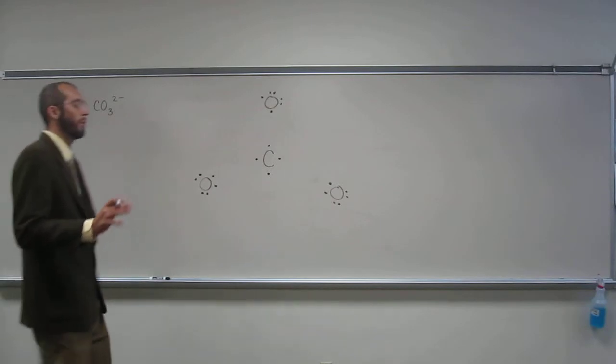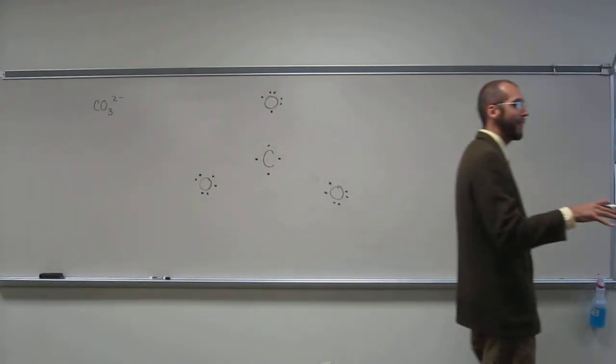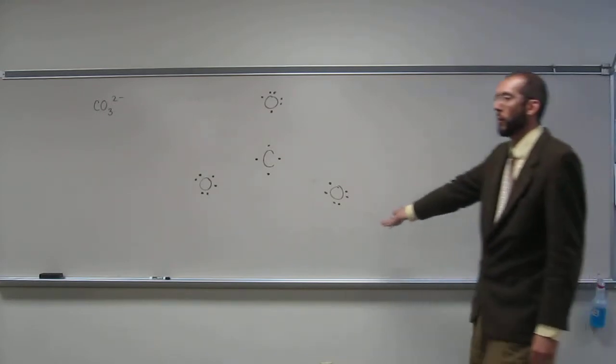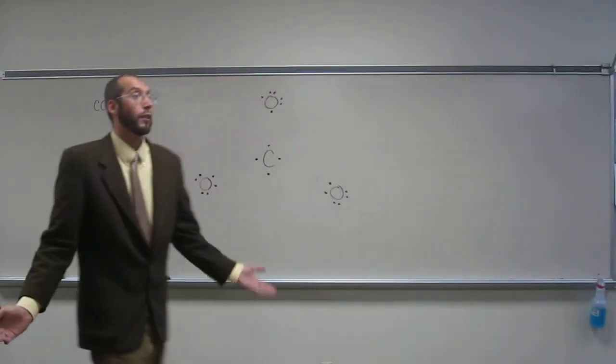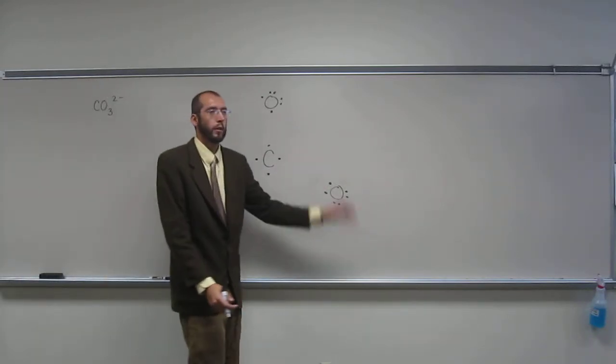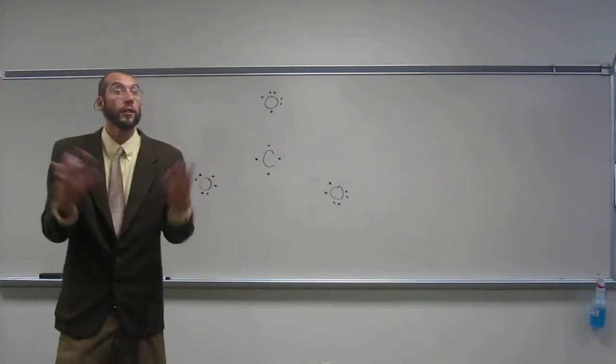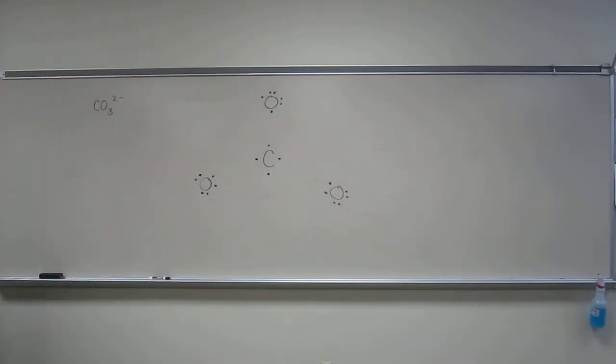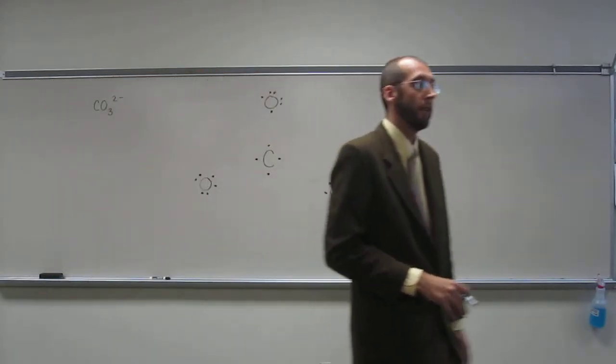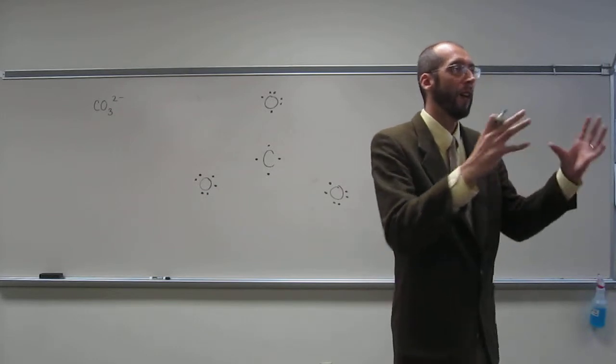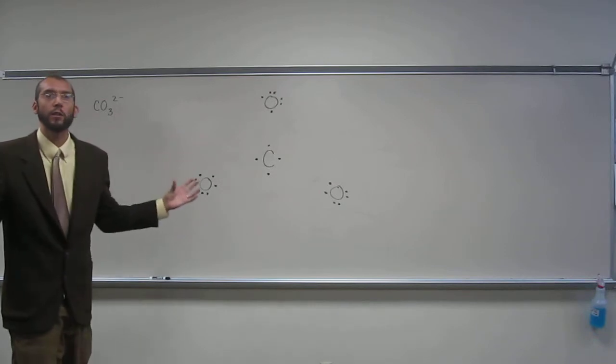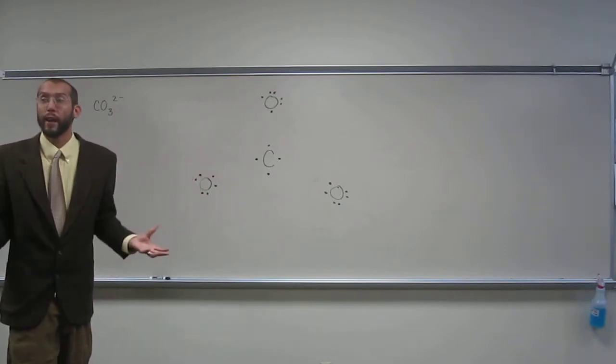The electrons will be added to the atom that has the highest electronegativity. Which one of those is it, carbon or oxygen? Oxygen. So which oxygen has the highest electronegativity? This one, this one, or this one? All the same, they're all the same. So the best way to do this is to add one electron to one oxygen, one electron to the other oxygen. Because things don't like to have a 2 minus charge, like one atom doesn't like to have a 2 minus charge if it can be dispersed over various atoms.